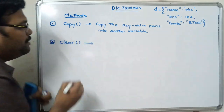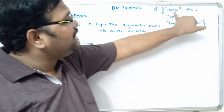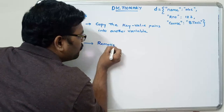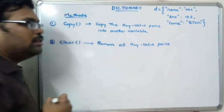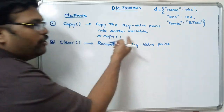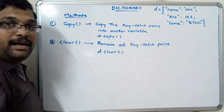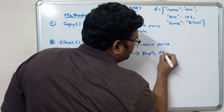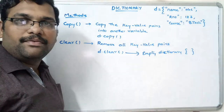Next is clear. The name itself indicates this function will clear all the items in the dictionary. We call key-value pairs in the dictionary as items. So d.clear() will remove all key-value pairs and give an empty dictionary as a result, because it clears all items of the dictionary.